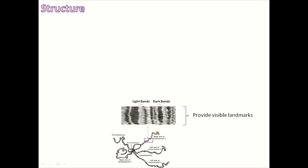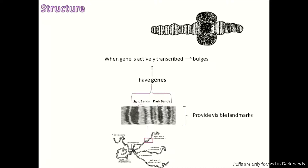These bands provide visible landmarks, and these landmarks can be used to identify the location of a specific gene on that chromosome. The bands contain genes that are actively transcribed, and when transcription is active, that region bulges out.